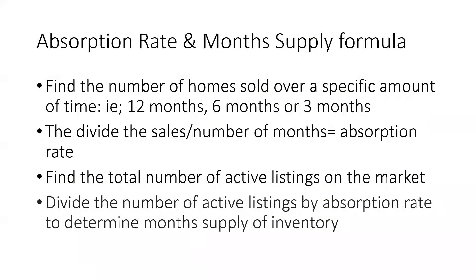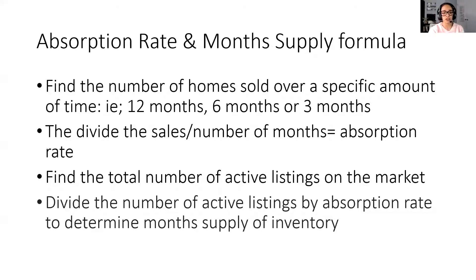A lot of times we think this is hard, but back in the day we used to calculate this stuff manually. So the first thing you need to do is find the number of homes sold over a specific amount of time — it could be 12 months, six months, three months, two months, or one month. You then divide the number of sold homes — the properties that closed — by the number of months, and that gives you the absorption rate.